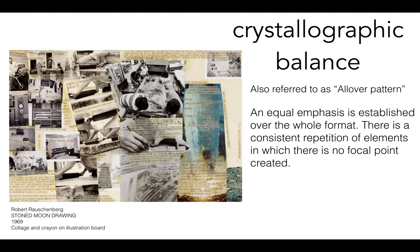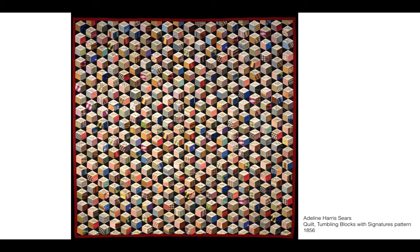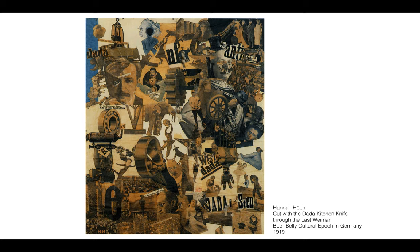Crystallographic balance can also be referred to as an all-over pattern. What that means is an equal emphasis is established throughout the entire format — there's no real focal point, everything feels fairly evenly weighted, and elements are repeated over and over again with no area emphasized over another. In this example from Hannah Hawk you'll notice the same thing: your eye might linger on some of the text, but there's enough text that an all-over pattern is being created.